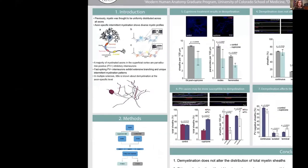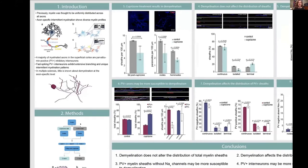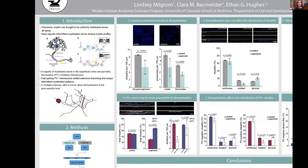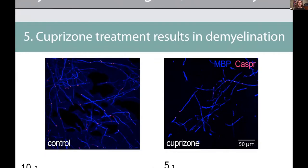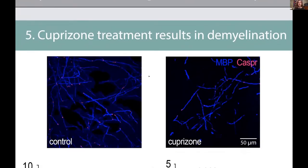In order to do this, we fed mice a cuprazone diet, which attacks the oligodendrocytes — the cells responsible for myelin production in the central nervous system. The first thing we wanted to do was confirm that the cuprazone diet actually works. On the left, we are looking at the superficial cortex of a control mouse, and on the right, the superficial cortex of a cuprazone mouse. In blue you see myelin, and in pink you see those perinodal proteins that flank both hemi nodes and nodes. In the cuprazone or demyelinated mouse, you can appreciate that there is much less dense myelination. So cuprazone does in fact work.